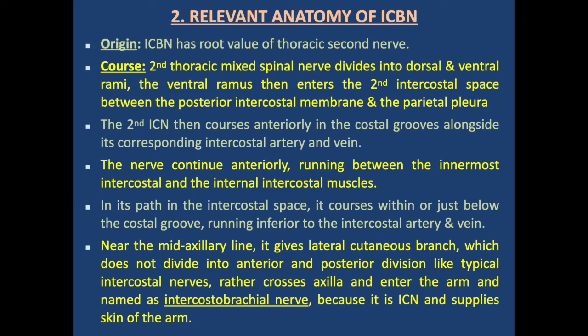The second intercostal nerve then courses anteriorly in the costal groove along with its corresponding artery and vein. The nerve continues anteriorly running between the innermost intercostal and internal intercostal muscles, coursing within or just below the costal groove, running inferior to the intercostal artery and vein. The VAN formula applies here: vein is superior, then artery, and the nerve is lowermost.